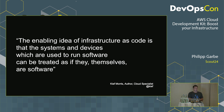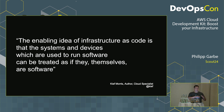I want to quote Keith Morris, who wrote a book about infrastructure as code. His definition: the enabling idea of infrastructure as code is that the systems and devices which are used to run software can be treated as if they themselves are software. So the stuff that runs our software should be treated as software too. If you think about an EC2 instance or a load balancer as software — it has an API, you can easily create new instances, remove them, change properties, and so on.